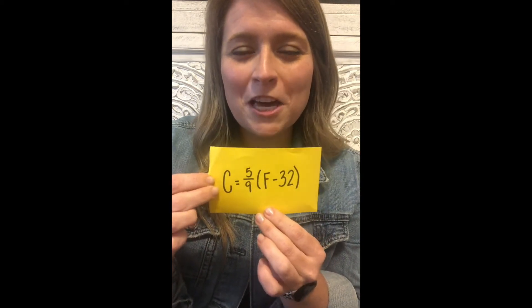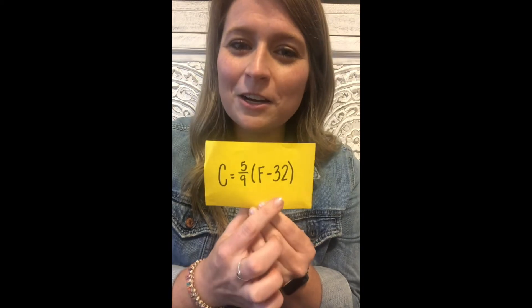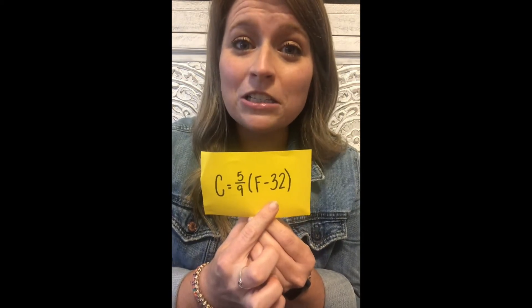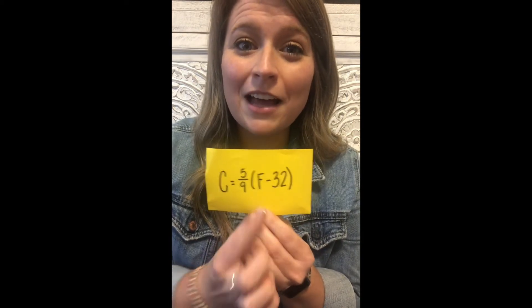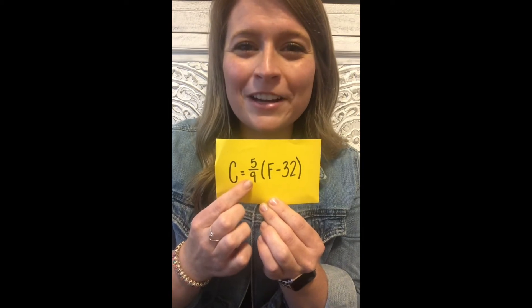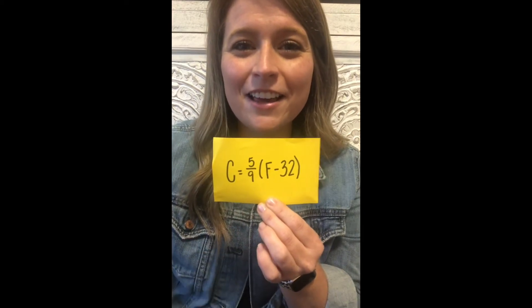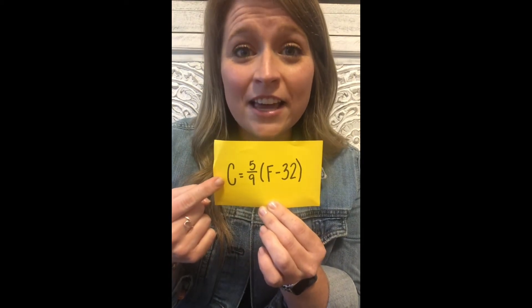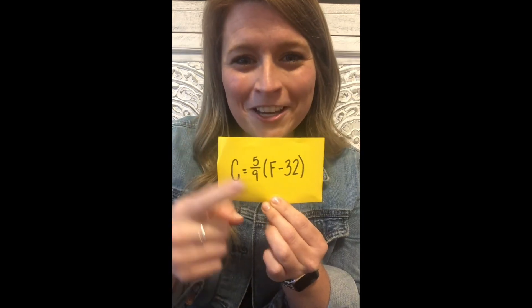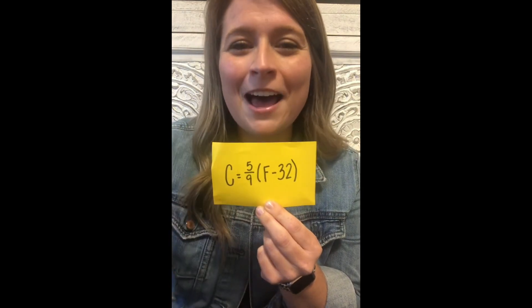See if you can pick up on this tune for this song. Subtract 32 from Fahrenheit, multiply your answer by 5 ninths — that'll give you Celsius. Just remember the rule is parentheses first, then multiply.